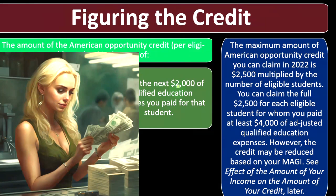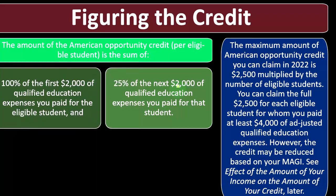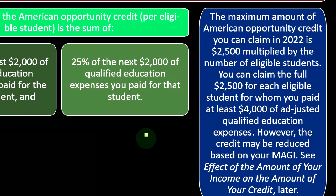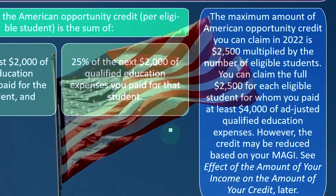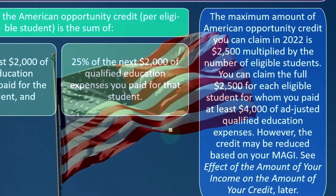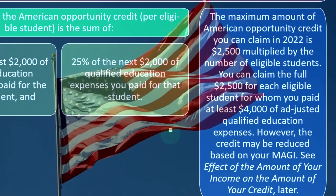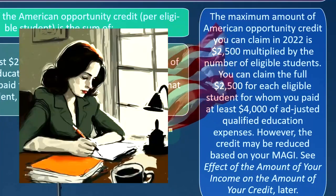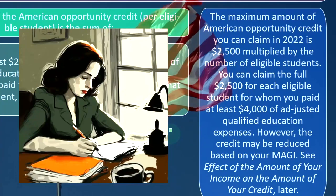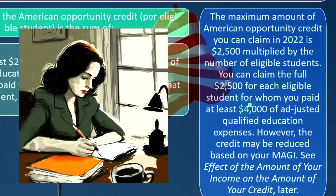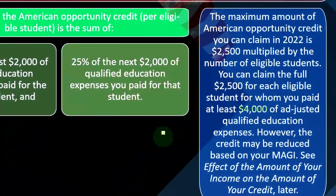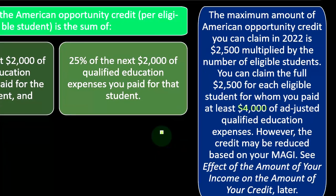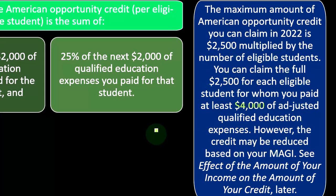Then 25% of the next $2,000, which is going to be $500. So the total credit is capped at $2,500 per student. The maximum American Opportunity Credit you can claim in 2022 is $2,500 multiplied by the number of eligible students. You can claim the full $2,500 for each eligible student for whom you paid at least $4,000 of adjusted qualified education expenses. Note that $4,000 is a fairly low number to get that maximum credit amount, especially since college is quite expensive these days.